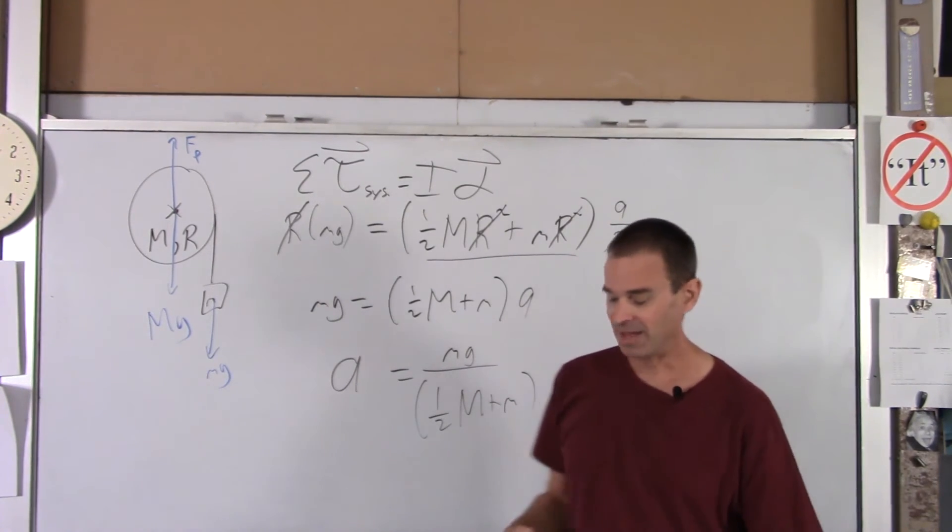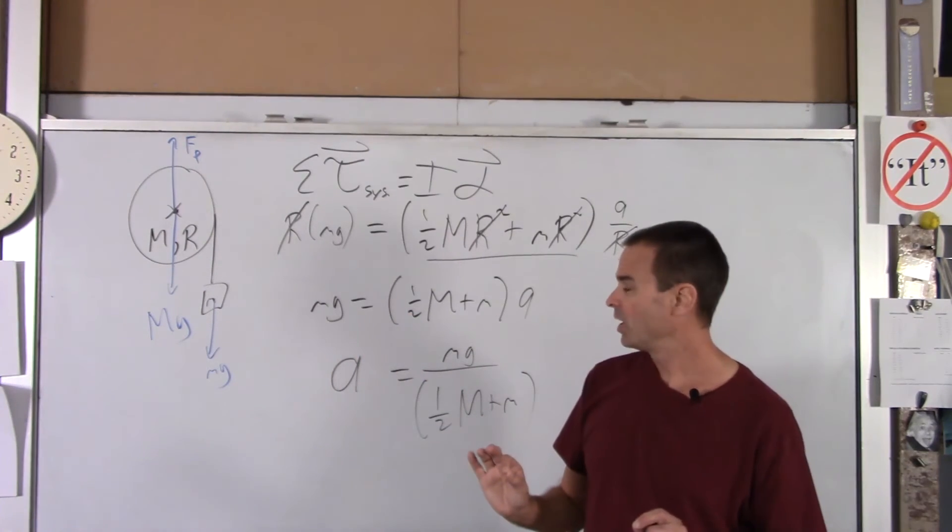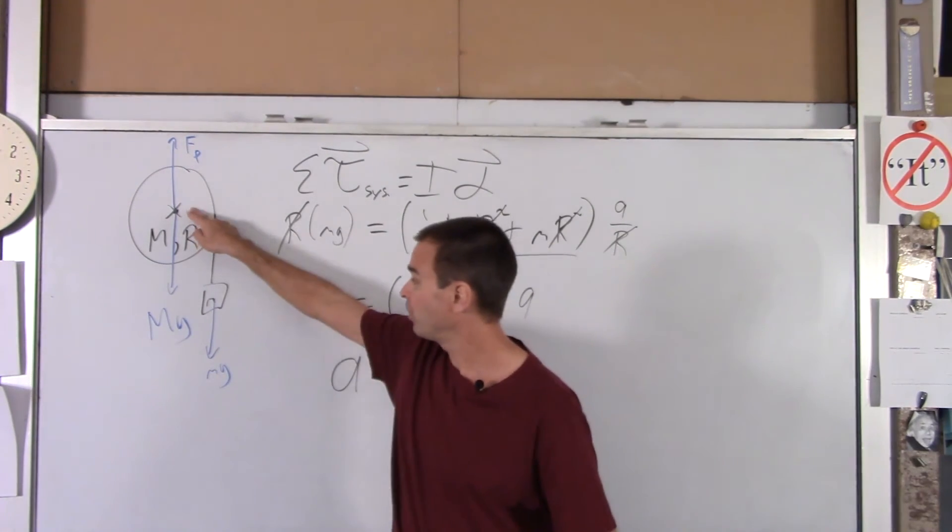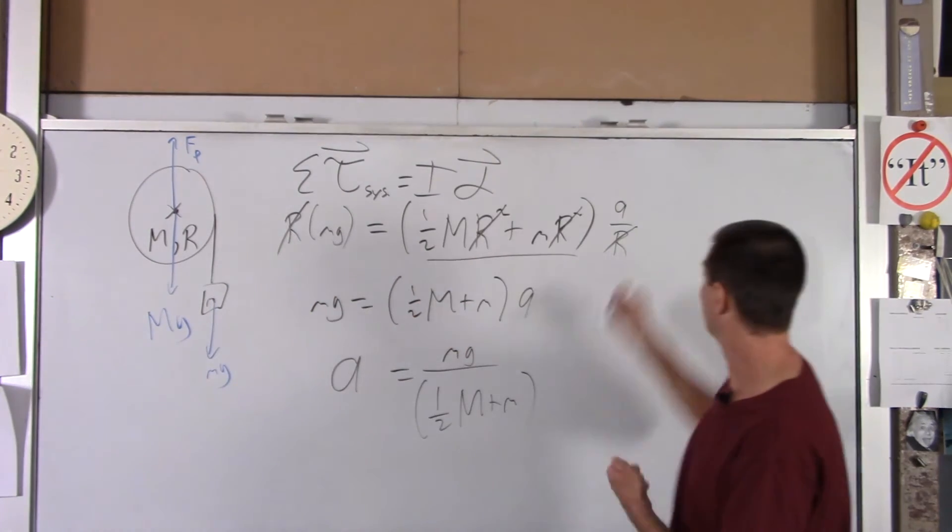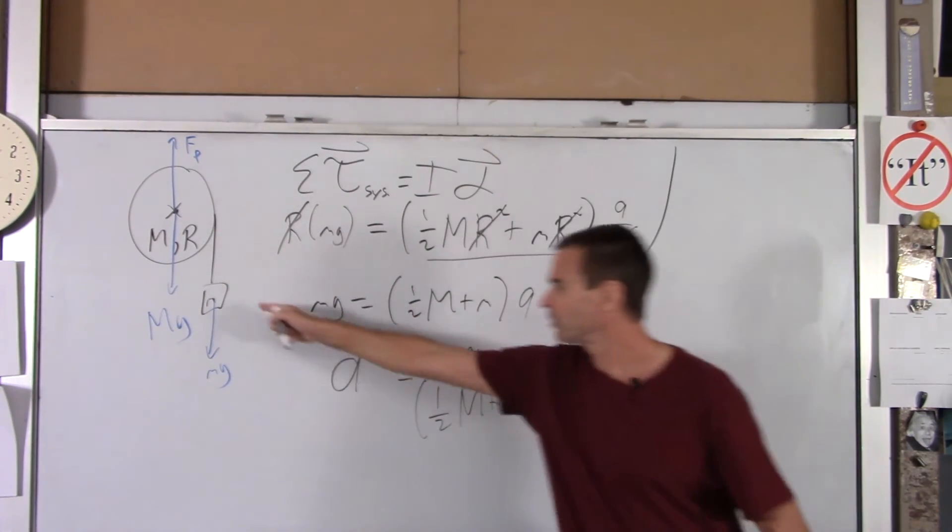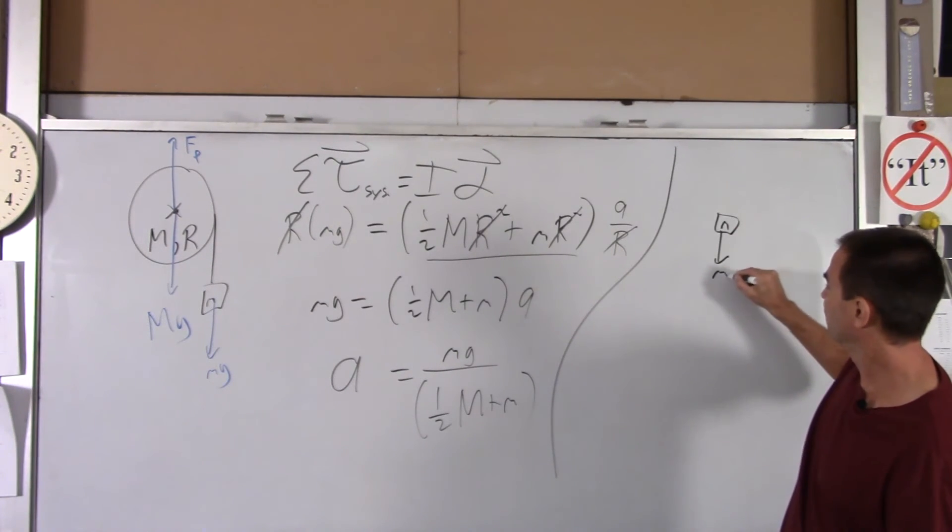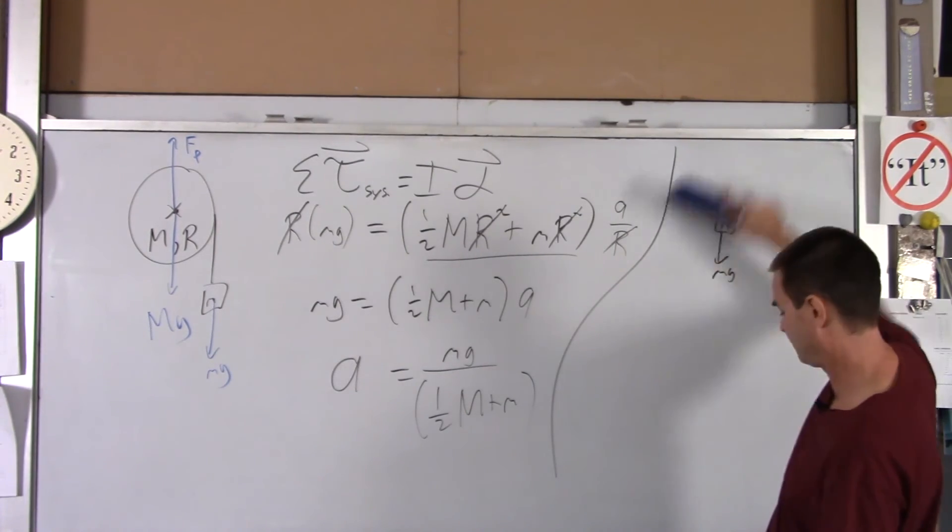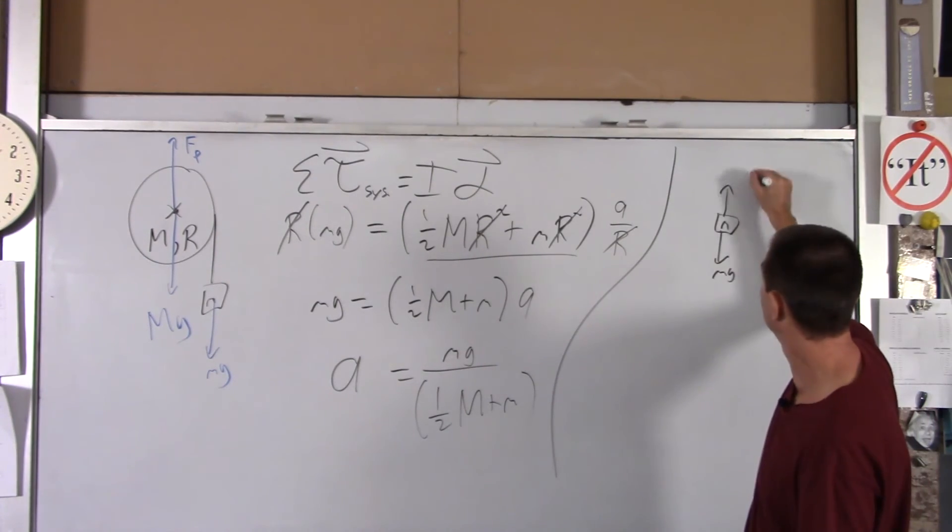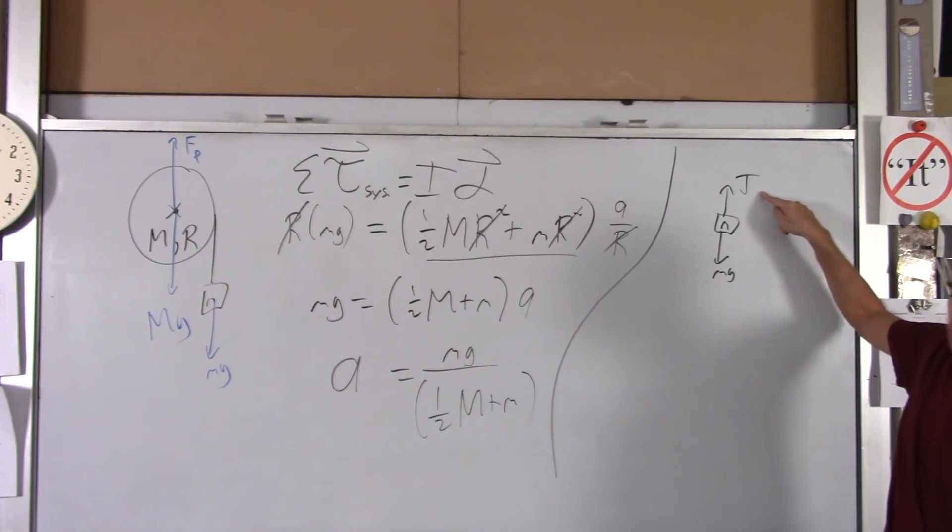And now, if you did want to go back and find the tension in the string, you would still have to pick either the pulley or the little mass and draw it individually, which is very easy to do. I'll do the little mass. So you've got the little mass. Forces acting on him are little mg. And the tension.